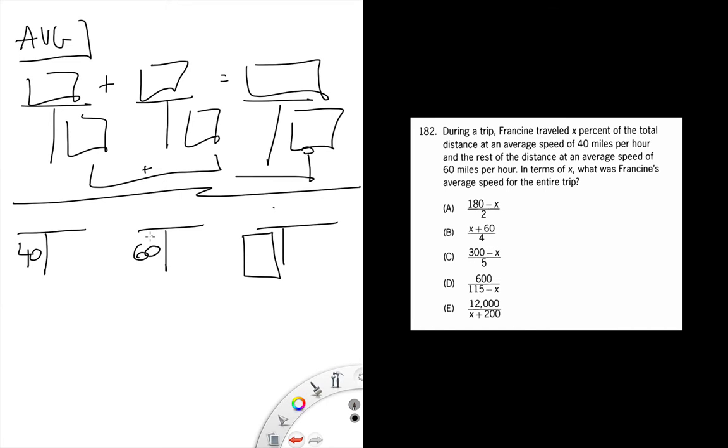Why not just say that she traveled x percent at this distance, and if we're talking about percents the total would be 100. Then because this plus this equals this, it must be that this is 100 minus x. Really easy way to do the algebra here.